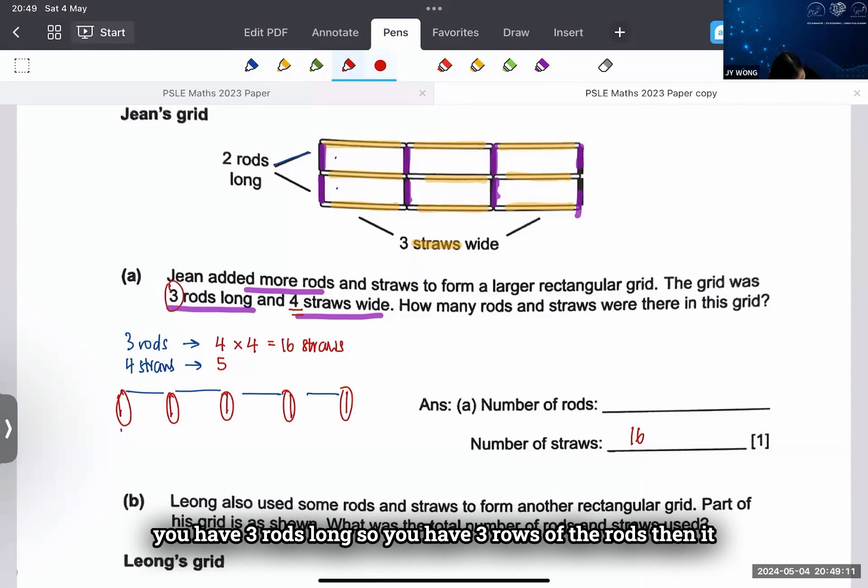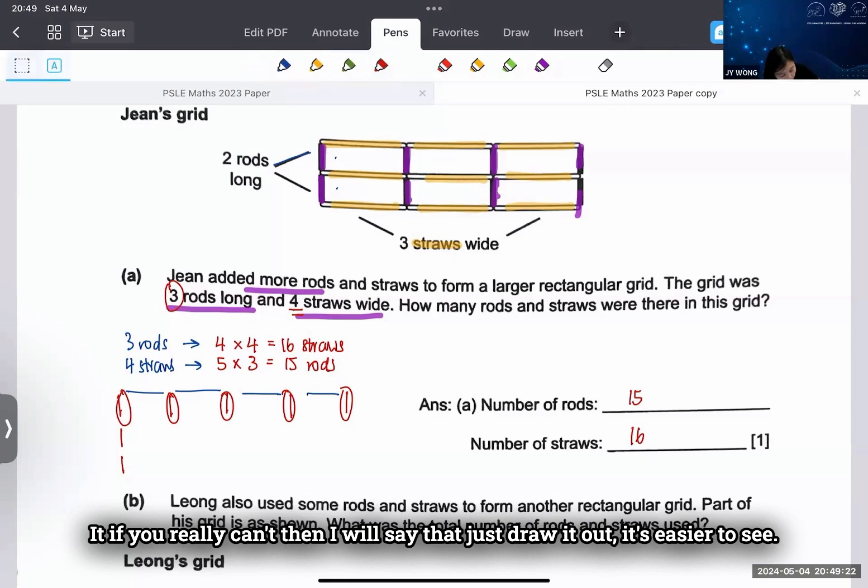Then it will be 5 times 3, which will give you 15 rods. That's how I get my answer. Okay, if you really can't, then I will say just draw it out. It's easier to see.